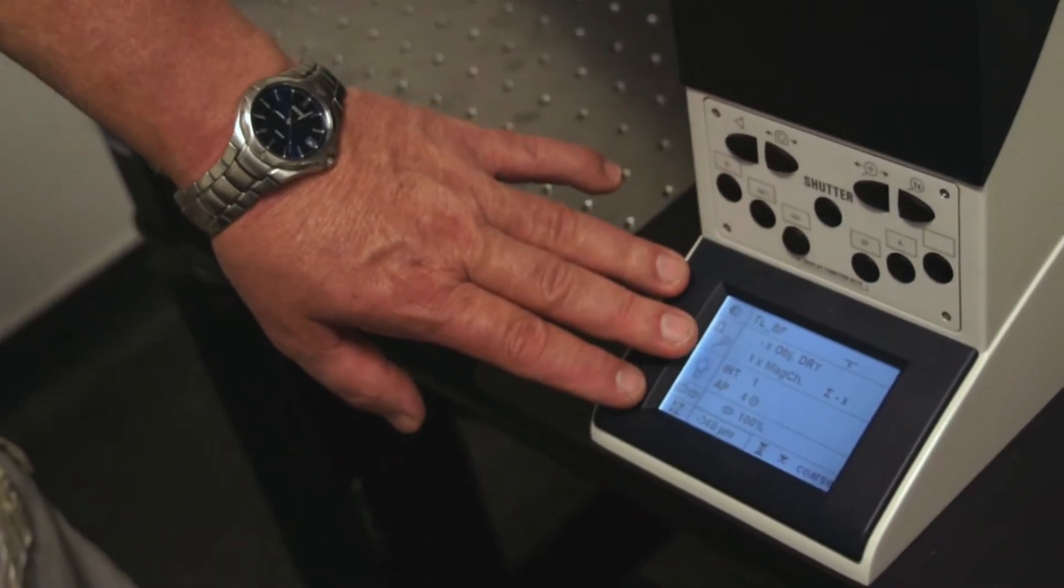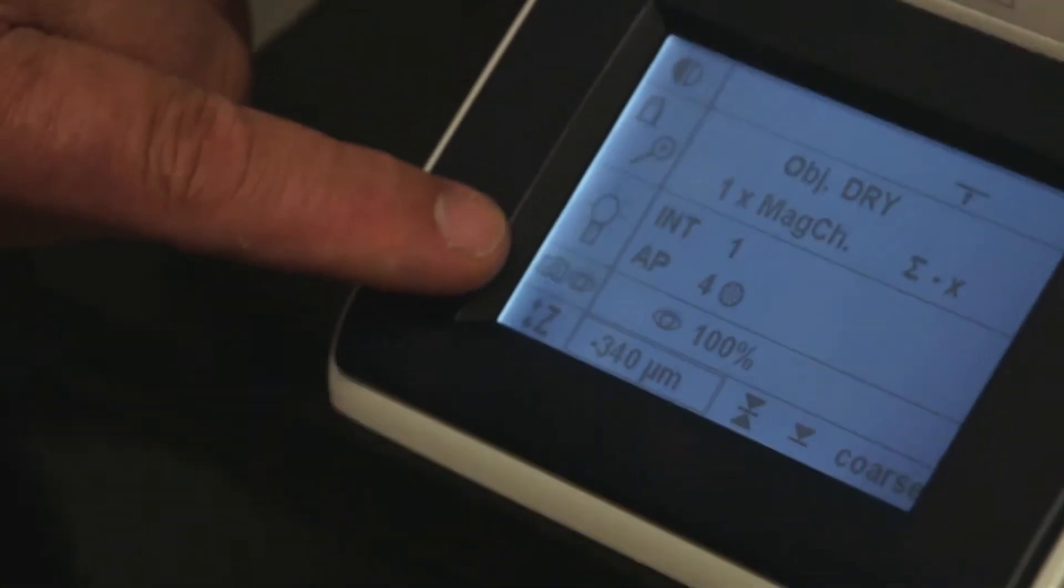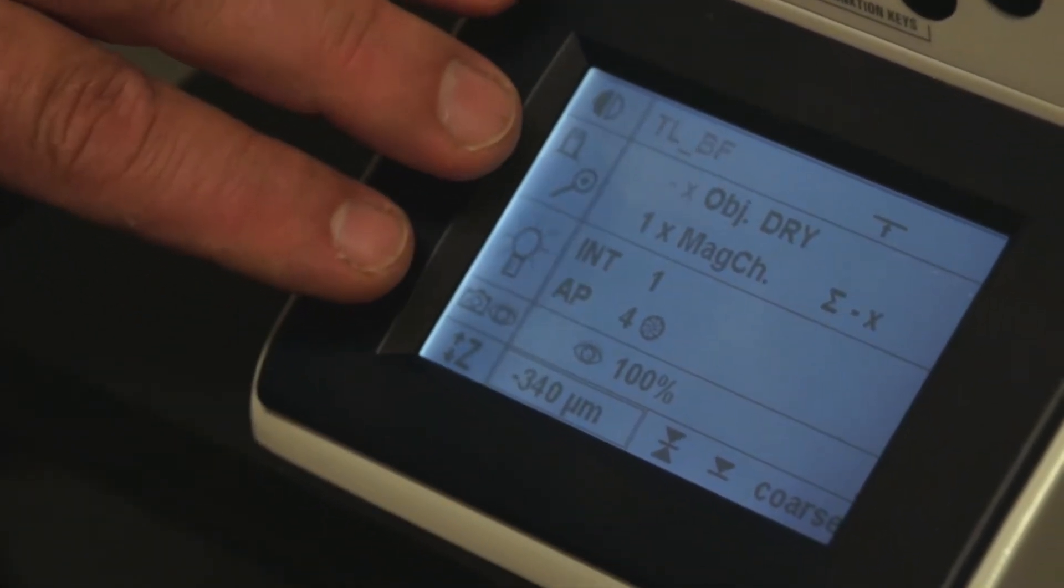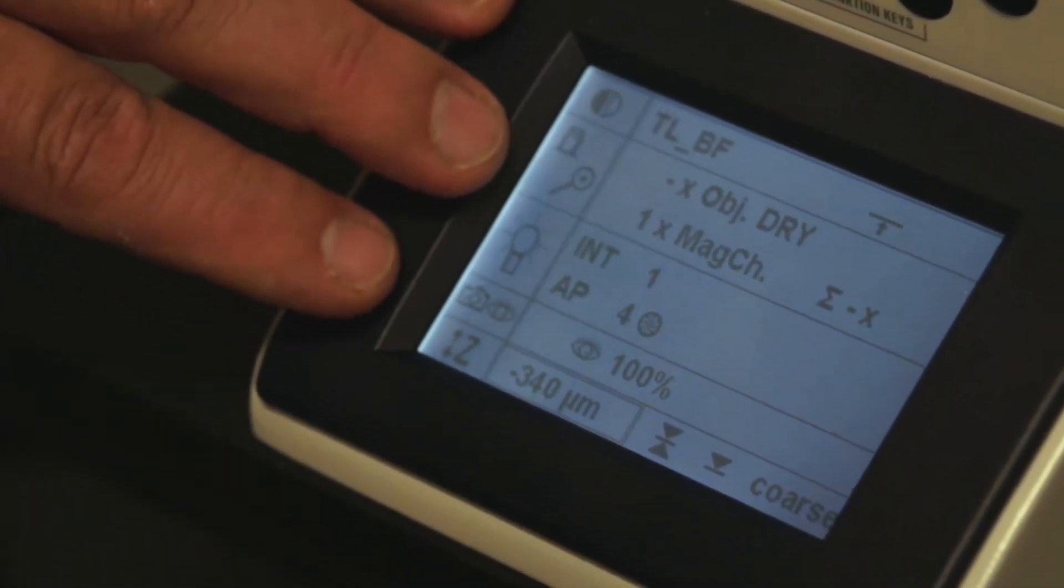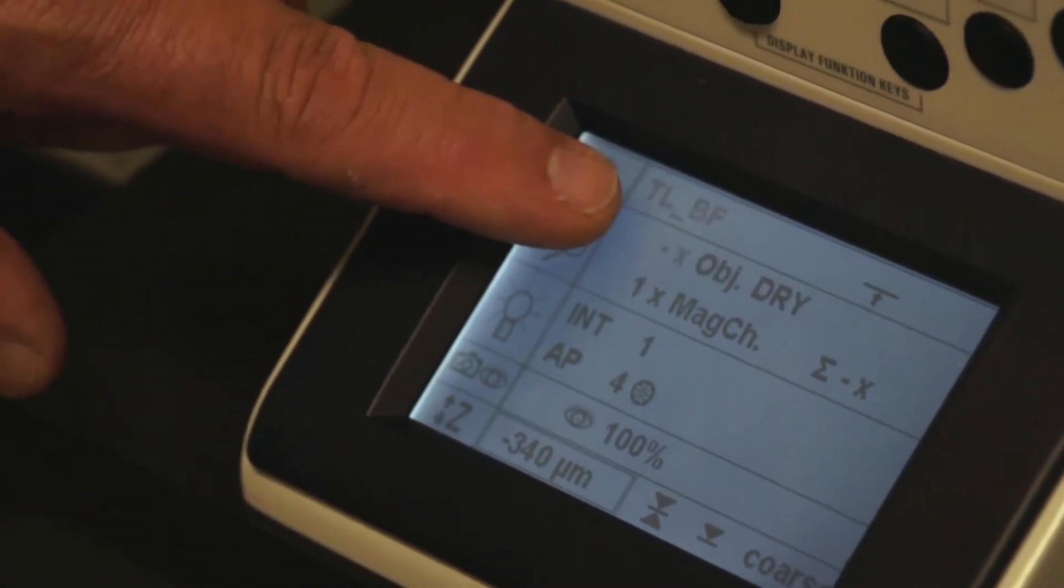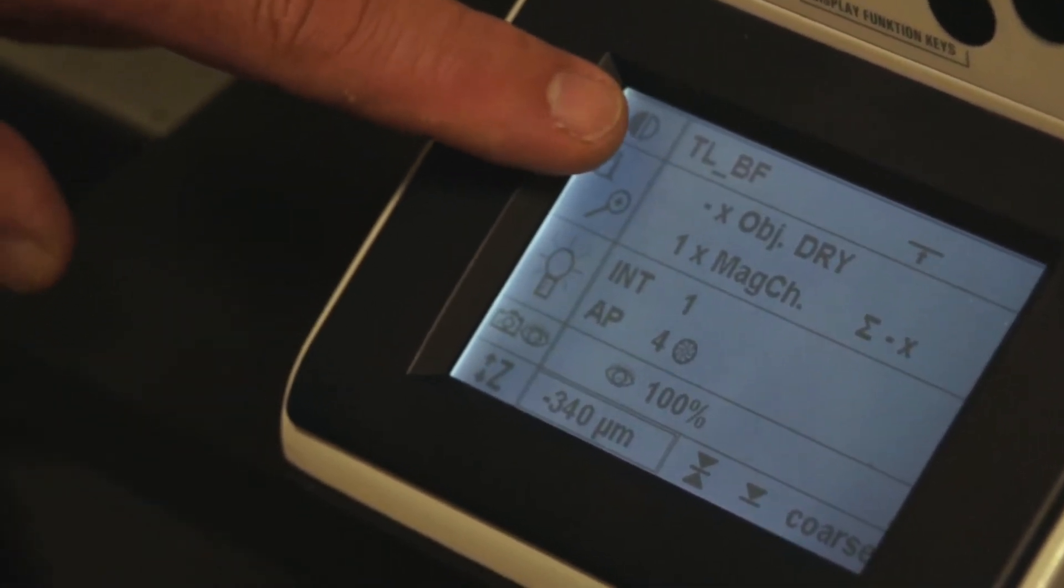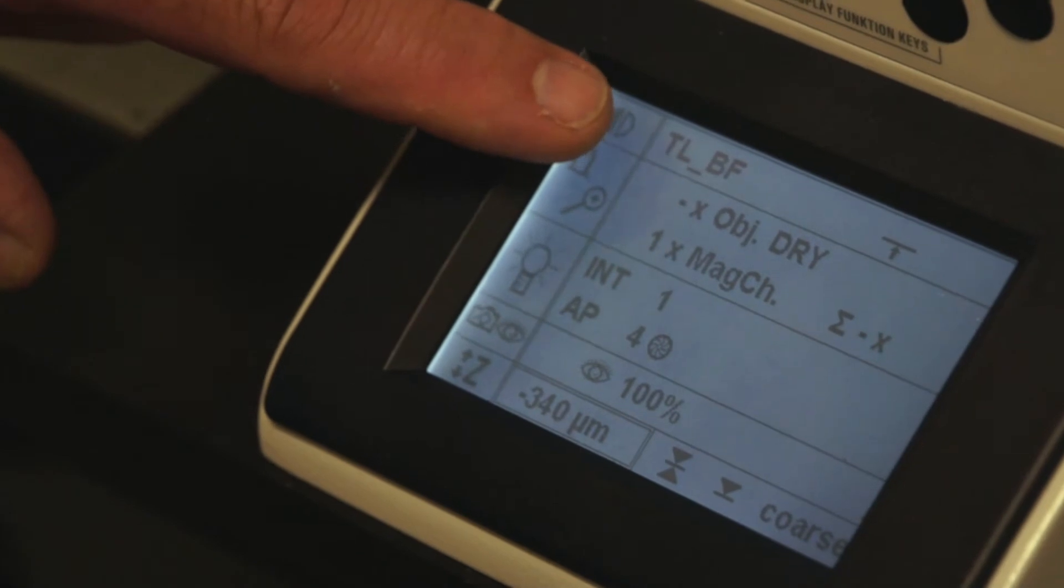This LCD screen on the front of the microscope gives you specific information about different parameters of the microscope use. You'll see immediately the flashing letters say transmitted light bright field, and so the microscope is in transmitted light bright field mode.